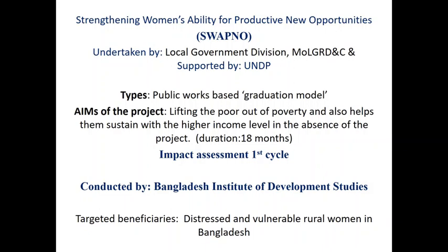The direct asset transfer program was first introduced in Bangladesh in 1985 through a partnership with the government and WFP. The project was called VGA — Vulnerable Group Feeding. After its successful completion, the project was escalated and renamed IGVGD — Income Generation for Vulnerable Group Development.